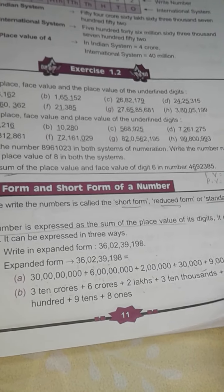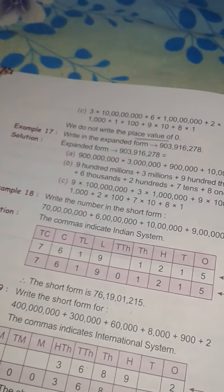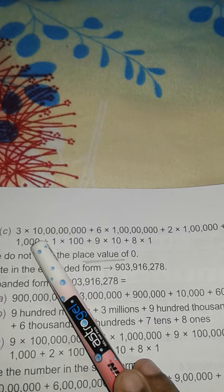Turn the next page. Another way is like this: we write 3 multiply 10 crores, 6 multiply 1 crore, 2 multiply 1 lakh.